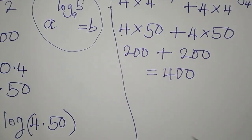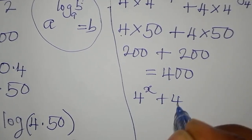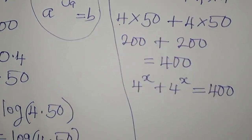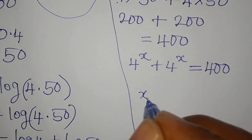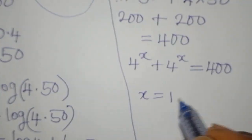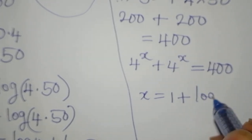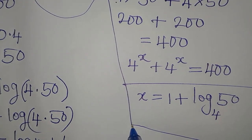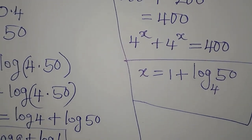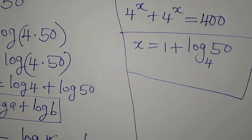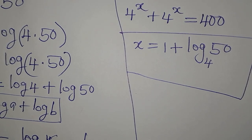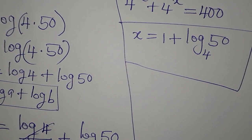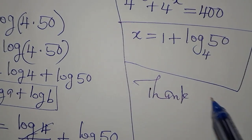This confirms that x equals 1 plus log 50 to base 4 satisfies the equation 4 to the power of x plus 4 to the power of x equals 400. Thanks for watching, and if you haven't subscribed to my channel, please subscribe so you can always have access to more of my videos.